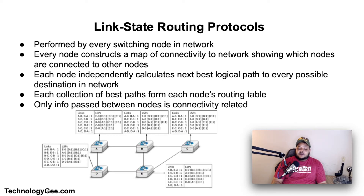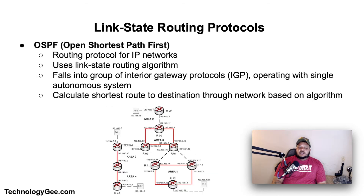Each collection of best paths will then form each node's routing table. This contrasts with distance vector routing protocols, which work by having each node share its routing table with its neighbors. In a link state protocol, the only information passed between nodes is connectivity-related. Link state algorithms are sometimes characterized informally as each router telling the world about its neighbors.